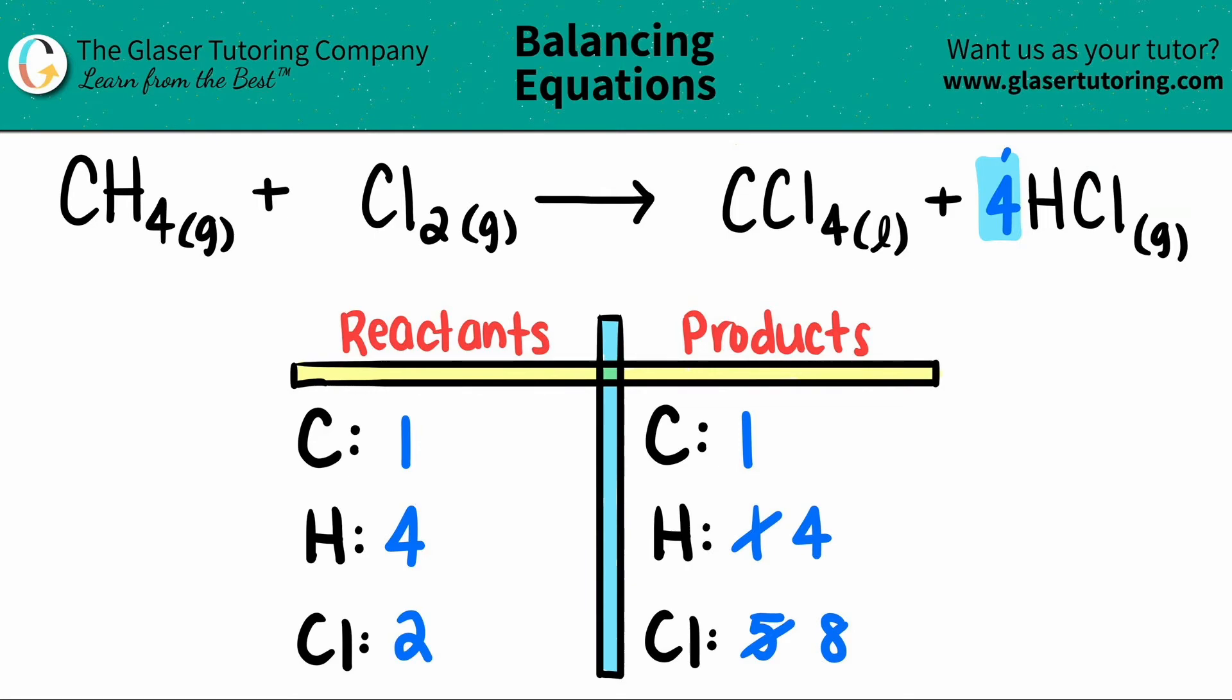So everything else is balanced except for the chlorines. But now it's easier, right? Lower number to higher number by multiplication. Two times what will get me to eight? Yeah, two times four. And whatever number that I stated is the coefficient for the element that I'm trying to balance. So I'm going to put a four here. And then in this case, we do not need to distribute because there was only one element in this molecule. So now four times two, just to double check, right? Four times two is eight. So we're good. And looky here, eight chlorines on both sides, four hydrogens on both sides, and one carbon on both sides.